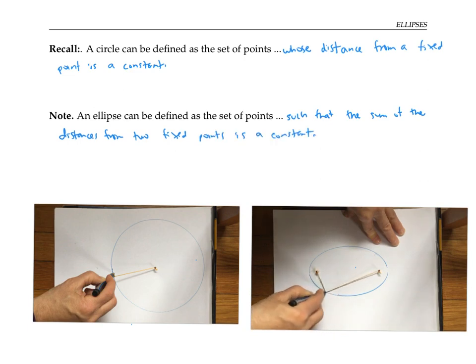The two fixed points are called focuses or foci. The sum of the distances to the two foci is the total length of the string, which is held constant as I draw the ellipse.